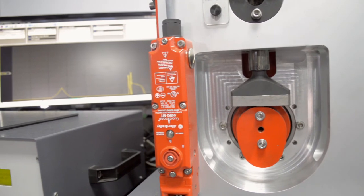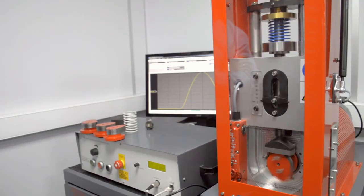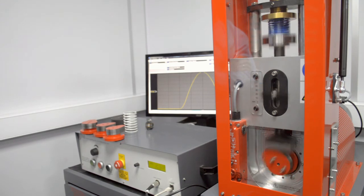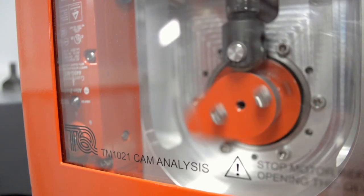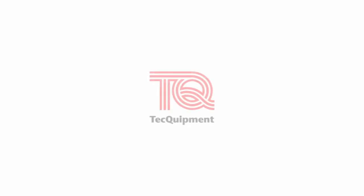Techquipment's TM1021 is a comprehensive machine that allows students to study cams and followers. It shows how they convert rotary to linear motion and helps students understand their limits of use before the onset of bounce.